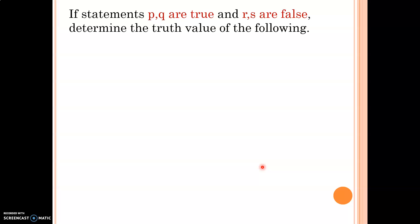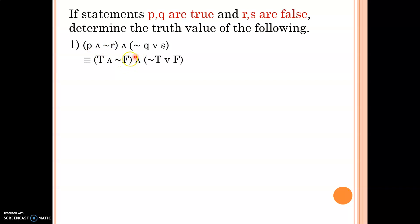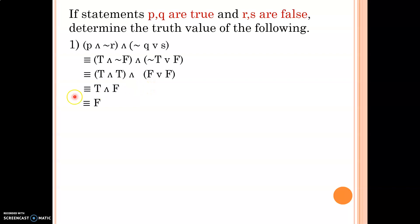If statements P and Q are true, and R and S are false, determine the truth value of P ∧ ¬R ∧ (¬Q ∨ S). Substituting truth values: P is true, R is false, Q is true, S is false. So: true ∧ ¬(false) ∧ (¬(true) ∨ false). Applying negations: ¬(false) = true and ¬(true) = false. So: true ∧ true ∧ (false ∨ false). Then: true ∧ true = true, and false ∨ false = false. Finally: true ∧ false = false.